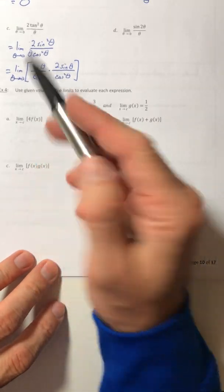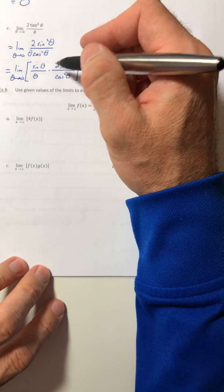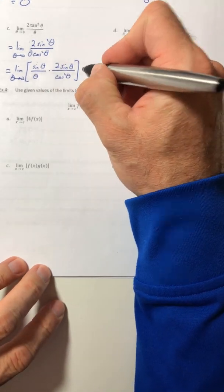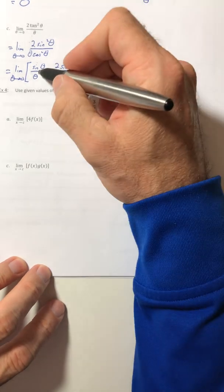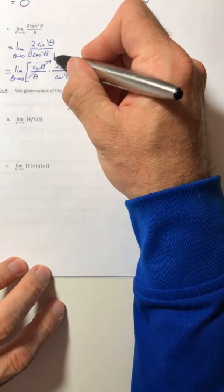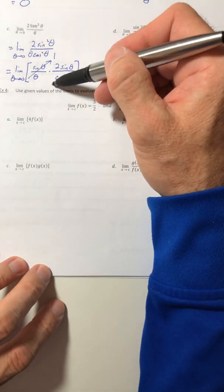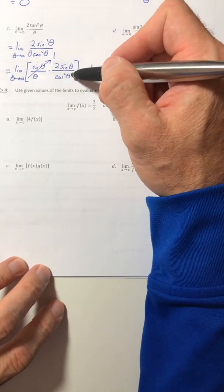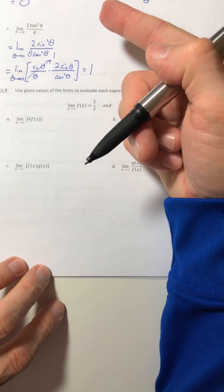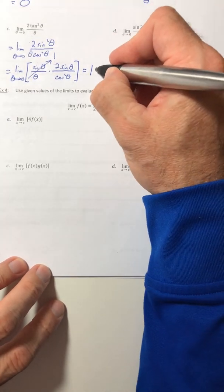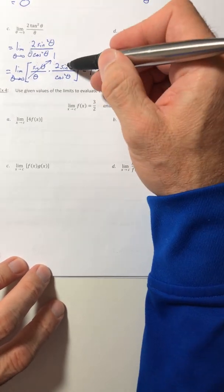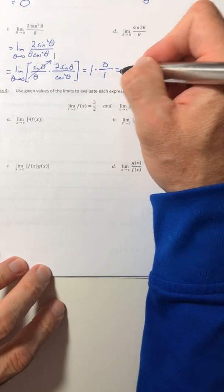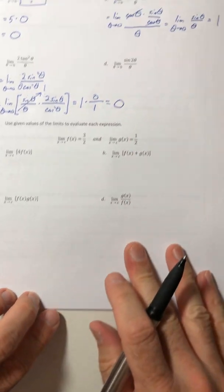So this first fraction, that was what I kind of wanted to get off on its own because I know that its limit is equal to one. So that's just one. So then I just have this part, which I can now plug in the zero for theta because cosine of zero is just one. One squared is one. Sine of zero is zero. Zero times two is zero. So if I simplify that down, that's just going to give me zero.